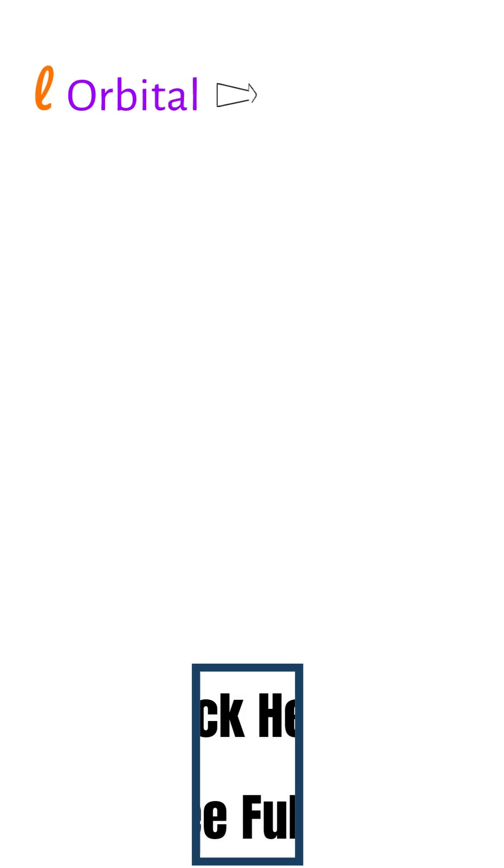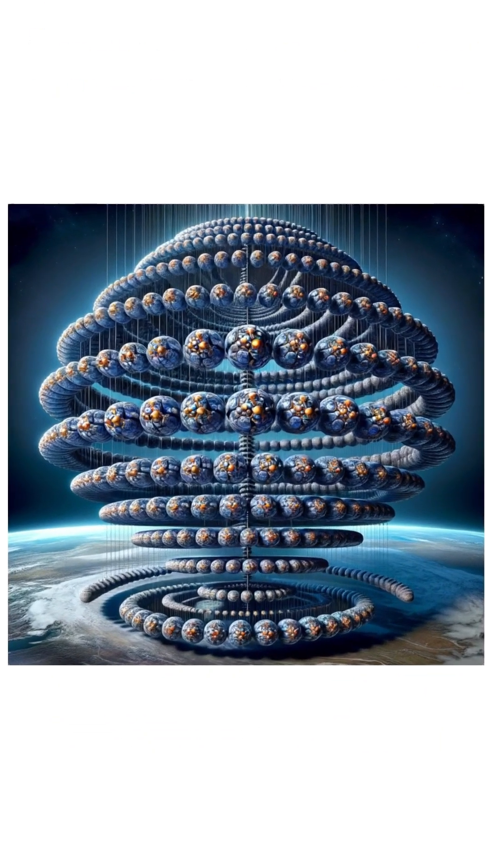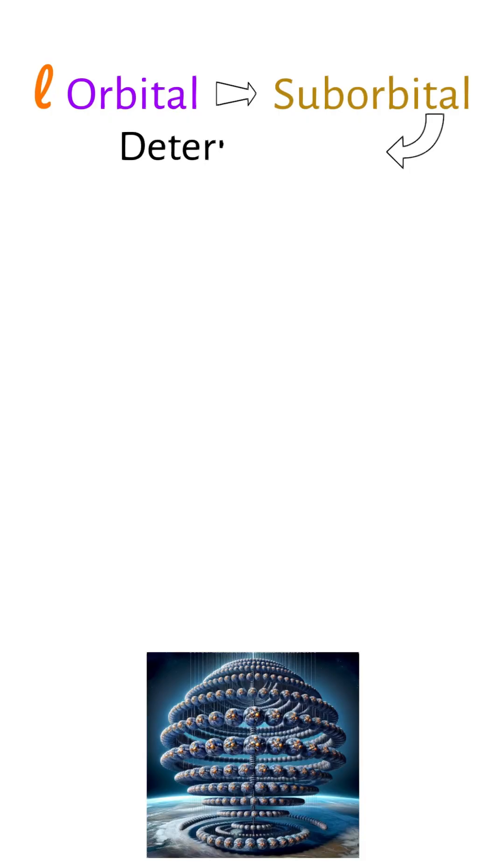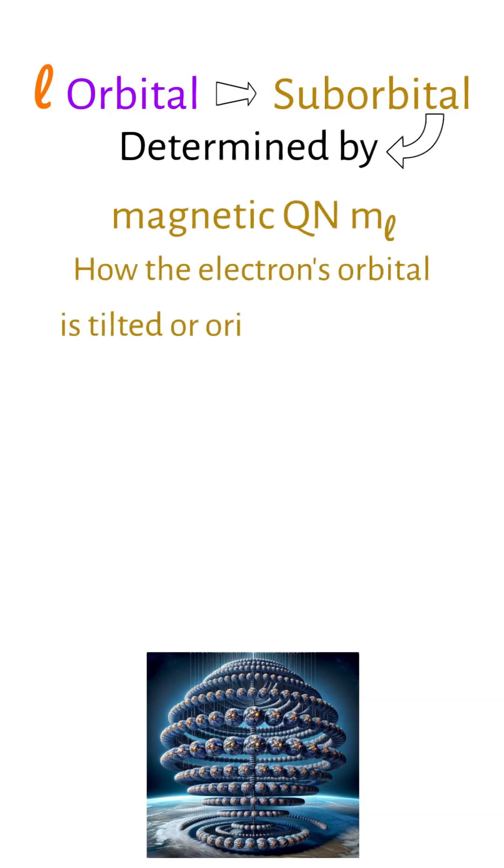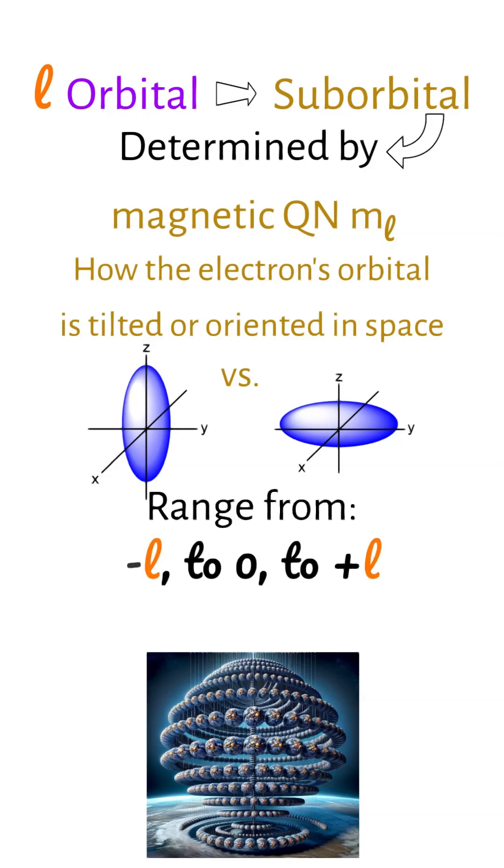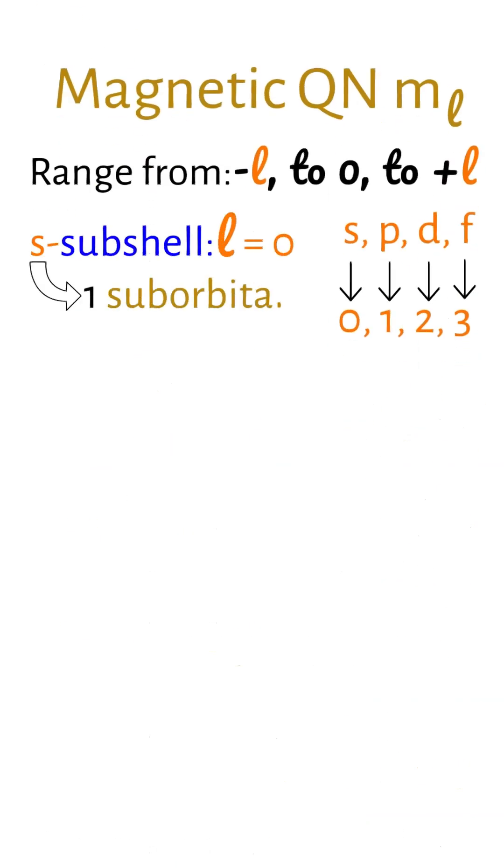Each L orbital contains suborbitals, its orbitals all the way down, determined by the magnetic quantum number M sub L, which is how the orbital is tilted or oriented in space. These M sub L orbitals range from negative L to 0 to positive L, so an S subshell L equals 0 has one suborbital 0.